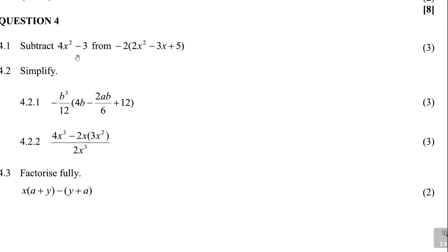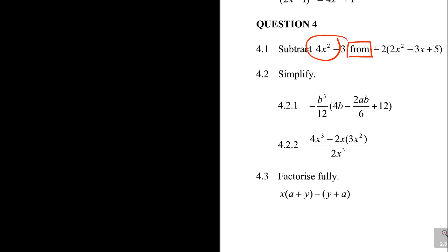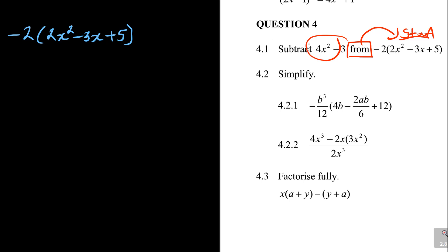Question four says: subtract this from this. Quick one - when they say 'subtract this from this,' the keyword is 'from.' From means start here - that's where you start. So you say minus two times (2x² - 3x + 5), subtracting from this one. Subtract means minus, so minus that expression (4x² - 3...).